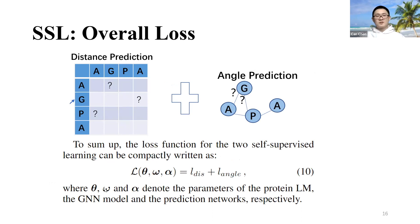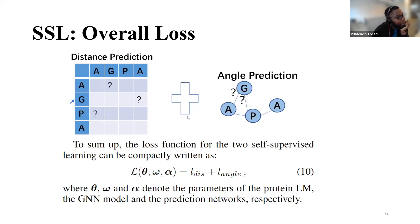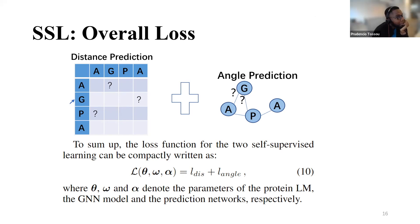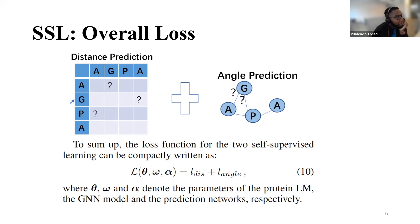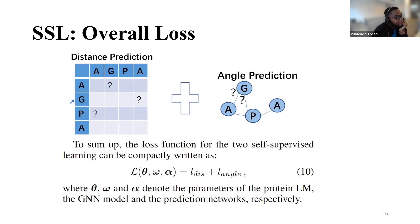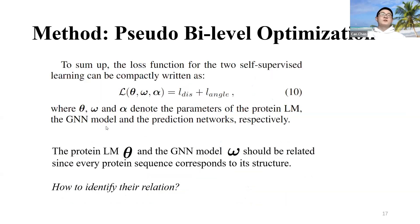The overall loss includes θ (protein language model parameters), ω (GNN parameters), and α (prediction network parameters). An audience member asked how different loss scales between the classification loss and regression loss are handled. The speaker replied they simply used a weight of 1 for both. The audience suggested using a validation set to tune these weights, using pre-training validation loss as the evaluation metric.